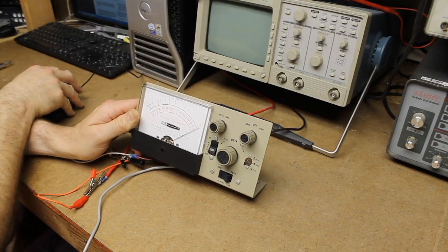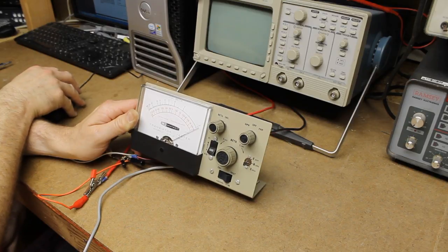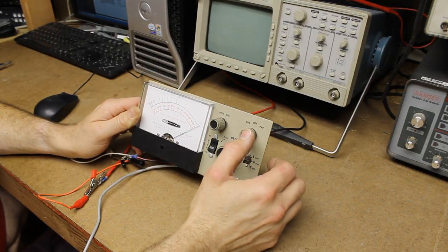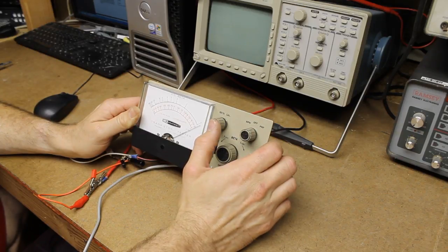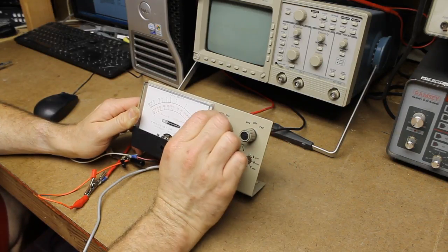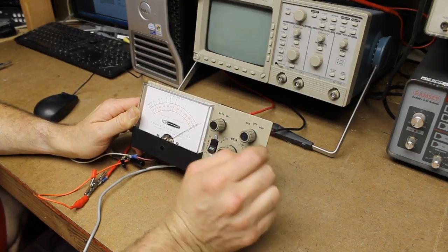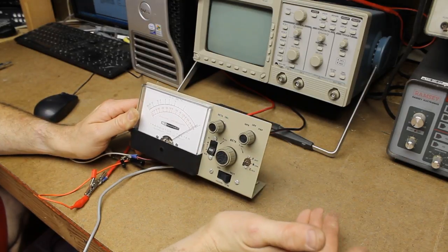So if you don't know the type of transistor, you follow the same procedure, switch it to PNP, and then try to adjust the beta into calibration. If you can't, then it's an NPN, according to the manual.